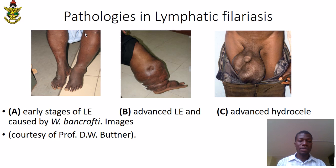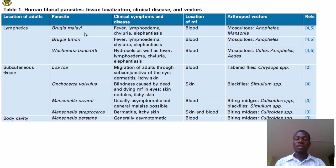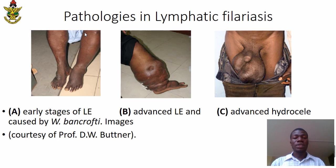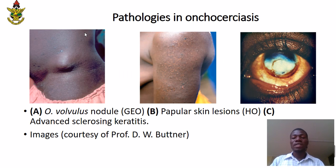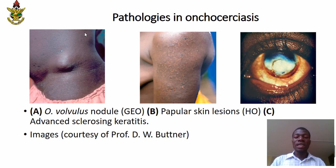This illustrates some of the pathologies associated with lymphatic filariasis. The first two images illustrate lymphedema, and the third illustrates the advanced form of hydrocele — the swelling of the scrotal sacs of the male genitalia. These are also some pathologies associated with onchocerciasis. We normally have nodules being formed on infected individuals, and then skin lesions — you can have dermatitis — and then some have the advanced form of sclerosing keratitis.